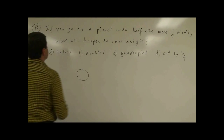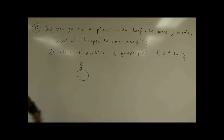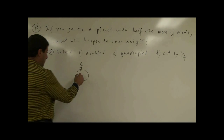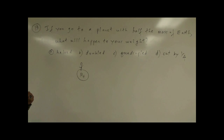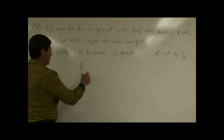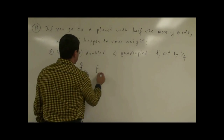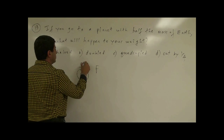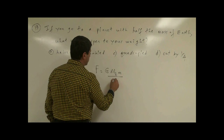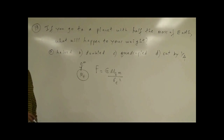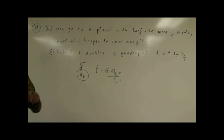We have a planet here. This is the planet Earth — this is the mass of the Earth. Let's say you weigh a certain weight at the surface of the Earth. Your weight is actually a measure of the force of gravity on your body. So the force between the planet Earth and you is going to be F equals G times M (mass of Earth) times m (your mass) over the radius of the Earth squared. So the distance between you and the Earth's center is going to be pretty much the same as the radius of the Earth.